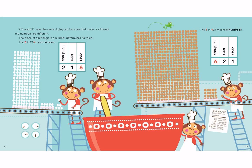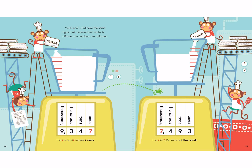216 and 621 have the same digits, but because their order is different, the numbers are different. The place of each digit in a number determines its value. The 6 in 216 means six ones. The 6 in 621 means six hundreds — there's a big difference between 216 and 621. Similarly, 9,347 and 7,493 have the same digits, but the 7 in 9,347 means seven ones, while the 7 in 7,493 means seven thousands.